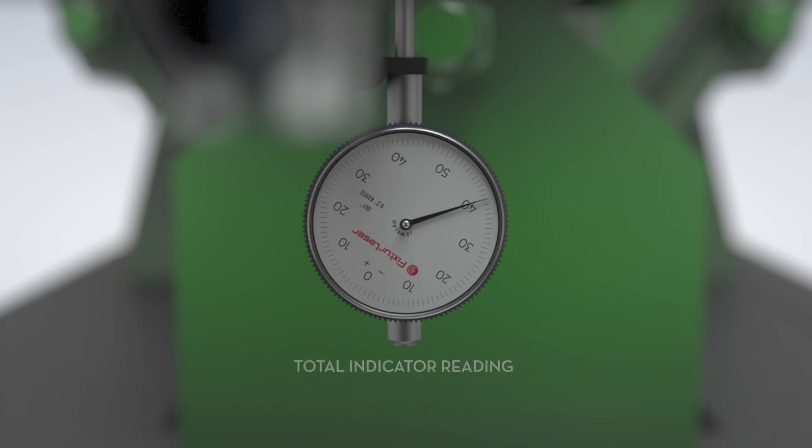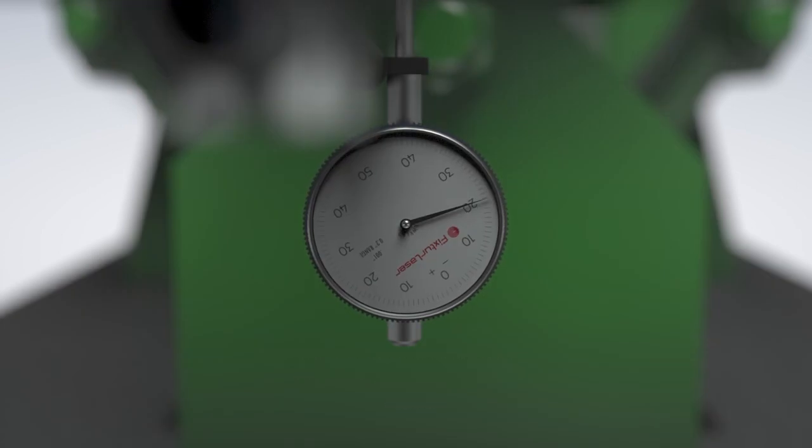This is total indicator reading, or TIR. We divide this number by two and rotate the bezel to minus 20 mils, the correct amount of misalignment. The dial indicator will now read the true position of the shafts, not just at 6 o'clock, but at any point in the rotation of the dial.